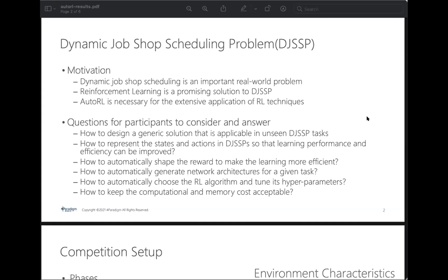The solution should be designed to, with an environment as input, automatically construct the state and action space, shape rewards, automatically select the RL algorithms and its hyperparameters, and train agents. We also listed some questions for participants to consider, such as how to automatically choose the RL algorithms or how to automatically generate the network architectures.